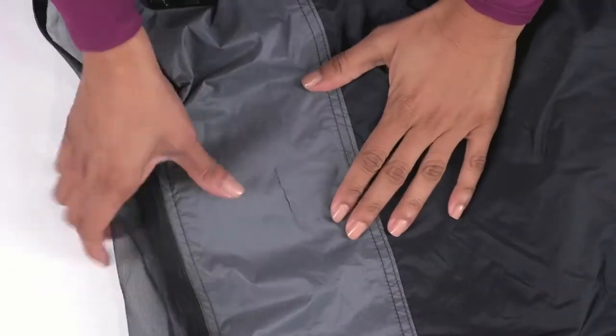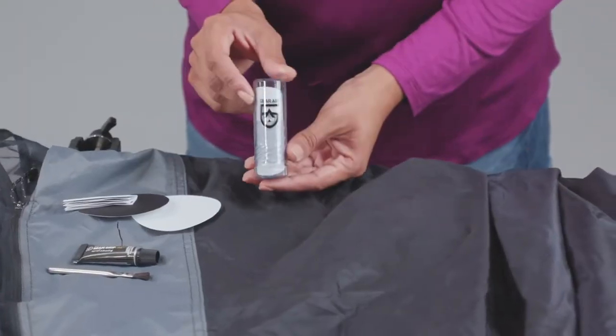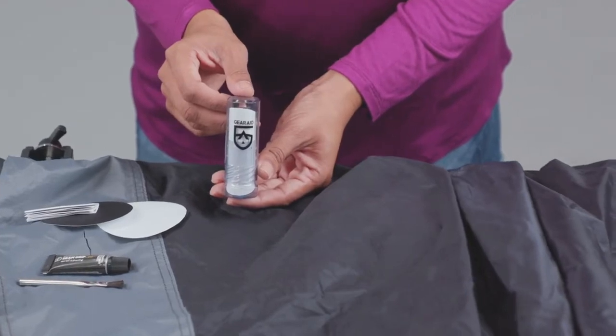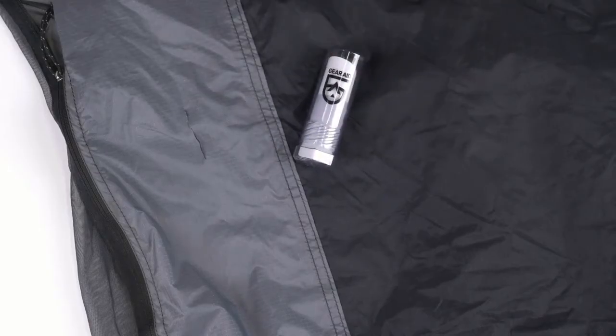Camping gear can get torn up fast. That's why we made the SeamGrip WP repair kit. Fix anything from a tent to a camping airbed with this lightweight kit.